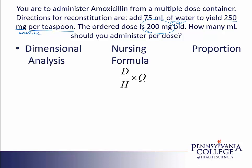We'll start with the dimensional analysis approach. In this approach, we start with the order of 200 milligrams and put it over one as a placeholder. Next, we'll use the strength of the med to cancel the milligrams, so we have 250 milligrams placed on the bottom of the fraction, per one teaspoon. Milligrams cancels.